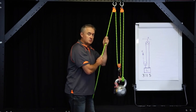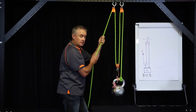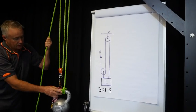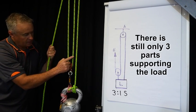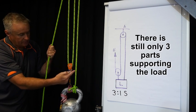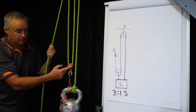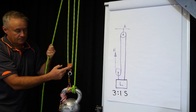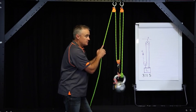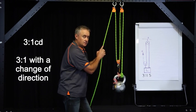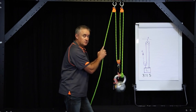But the question is, does that change our mechanical advantage? Do we still have a three-to-one? If we look at that closely, there's still only three parts of rope that support our load, either directly or through the travelling pulley. So we still have a three-to-one, but the difference is we're hauling through a change of direction. We call this a three-to-one CD, or some people call it a three-to-one reaved to disadvantage.